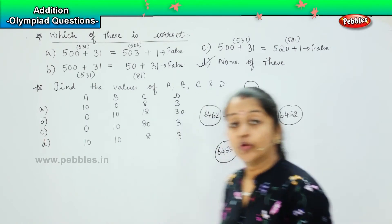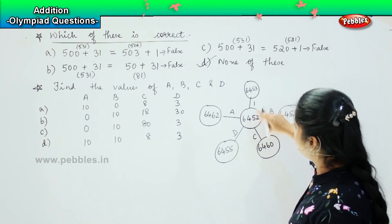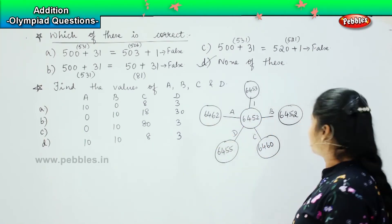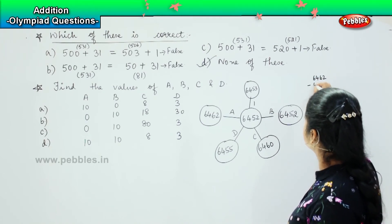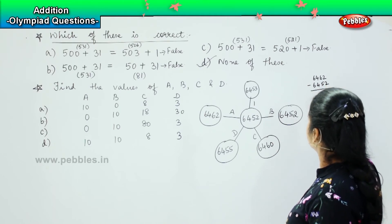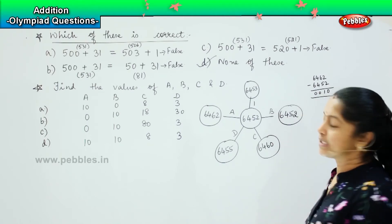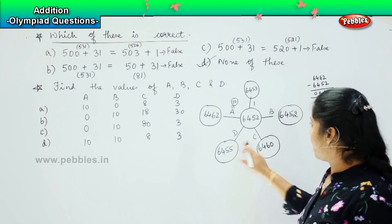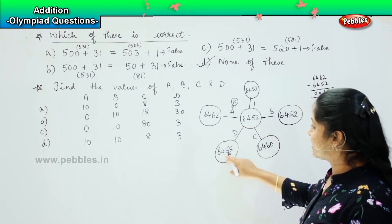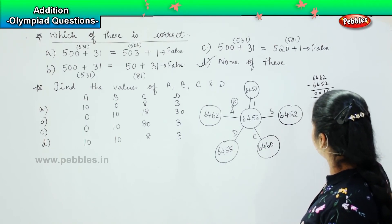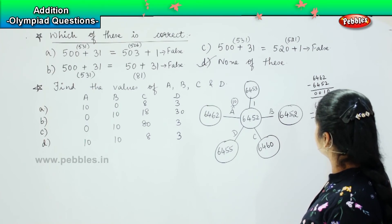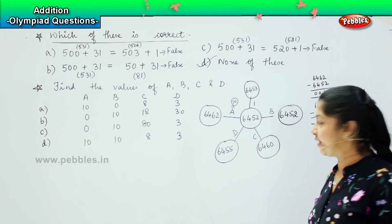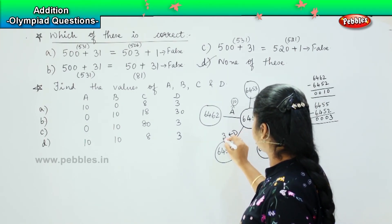So now we need to find out the answers. Starting with the first one: 6452 plus 1 gives 6453. Now 6462 minus 6452 — 2 minus 2 is 0, 6 minus 5 is 1, giving us 10. So the value of A is 10. Coming to the next one: 6455 minus 6452 — 5 minus 2 is 3, then 0, 0, 0. So the value of D is 3.